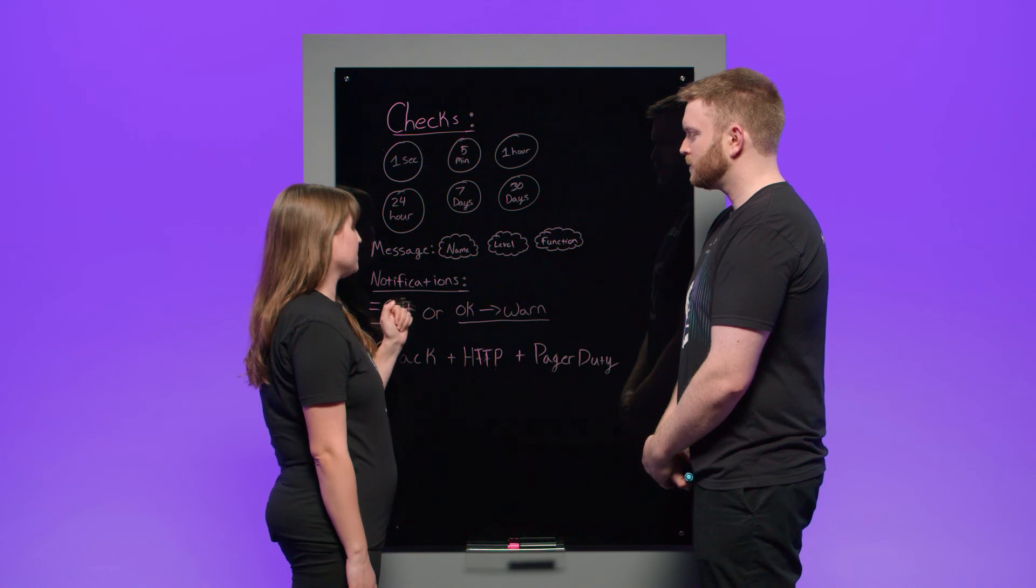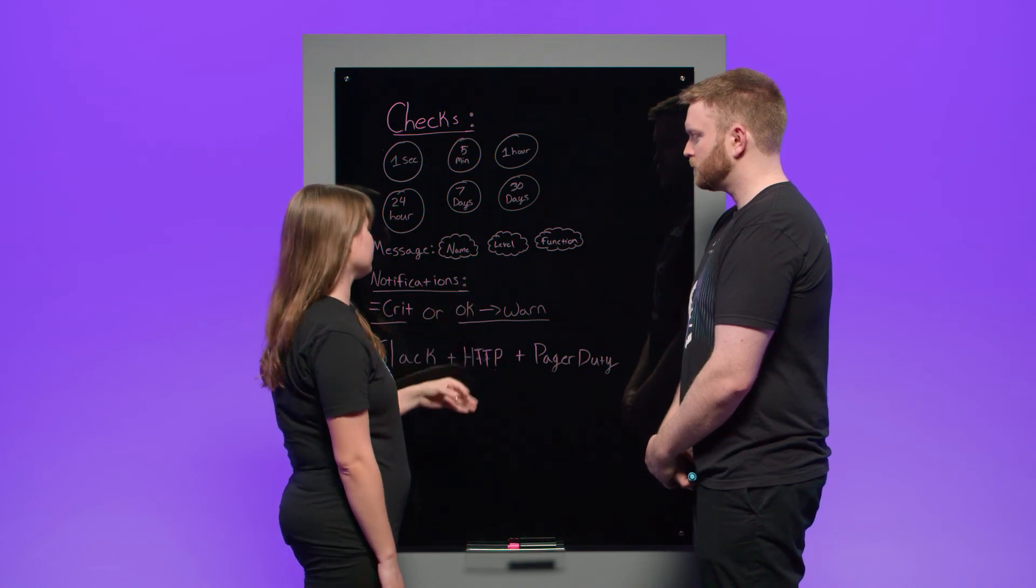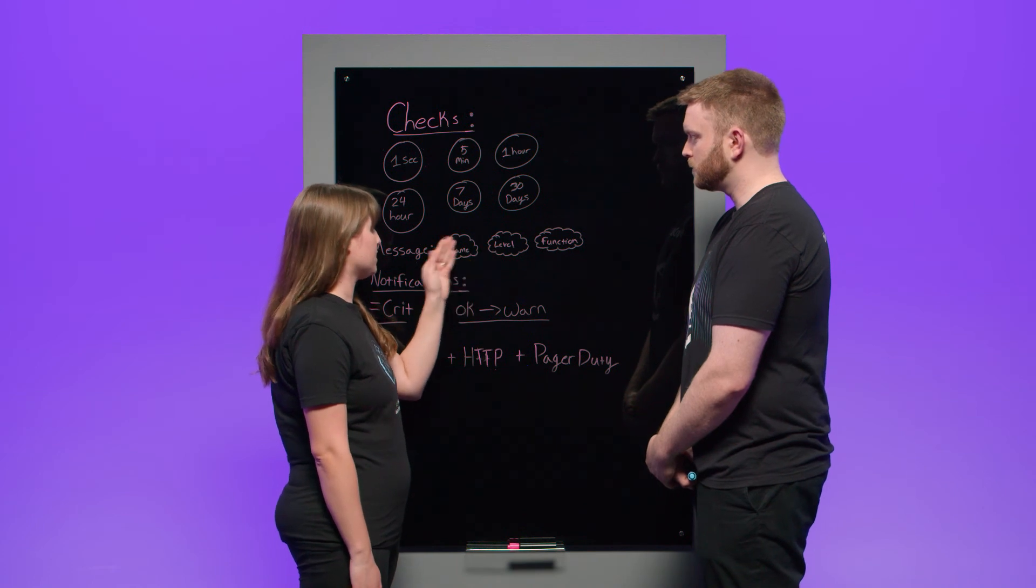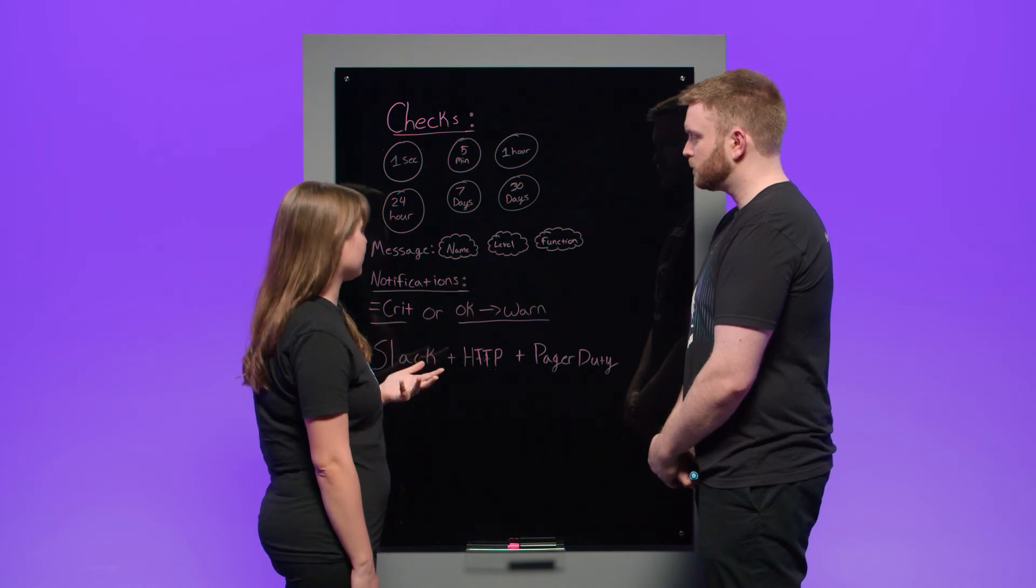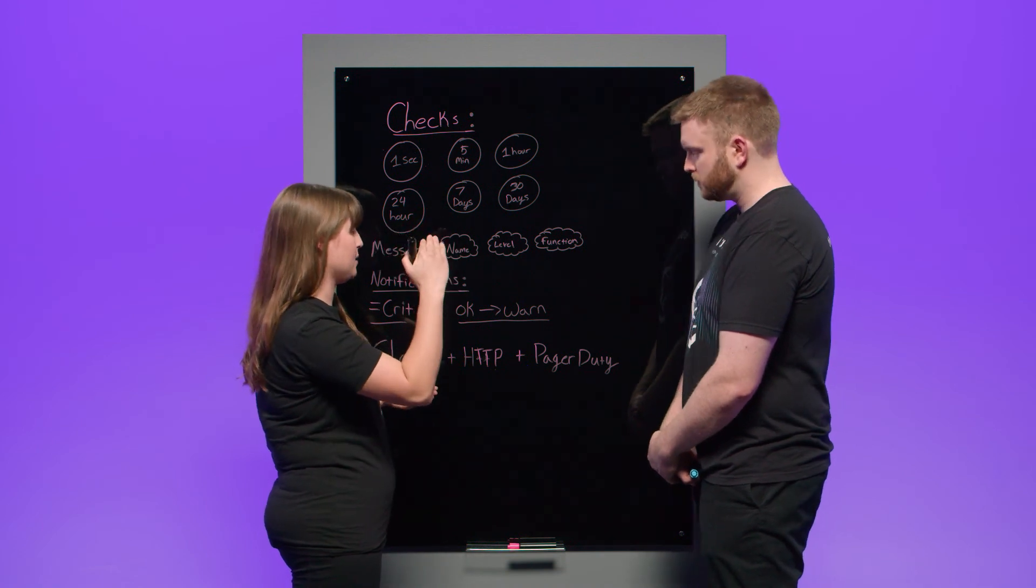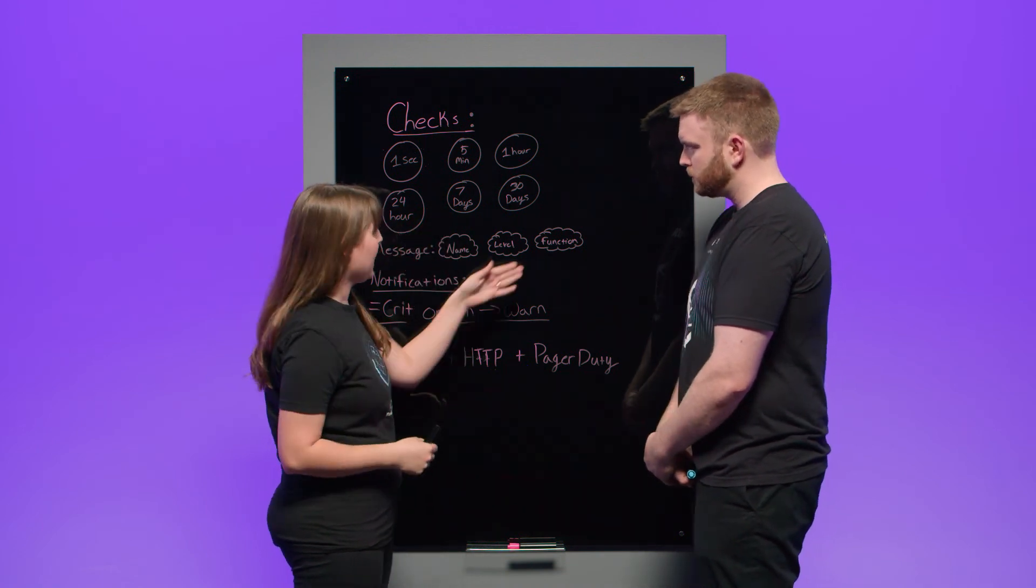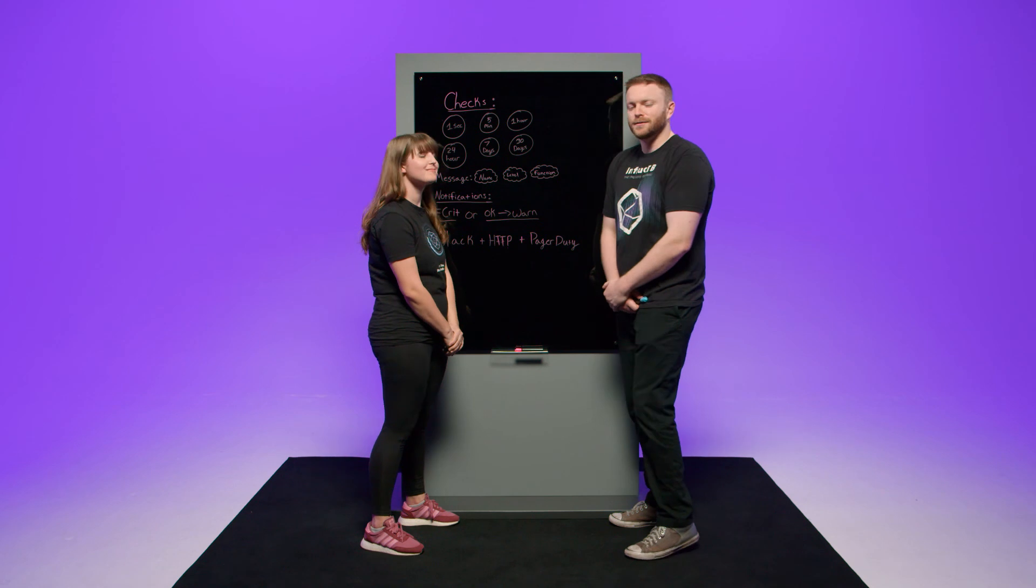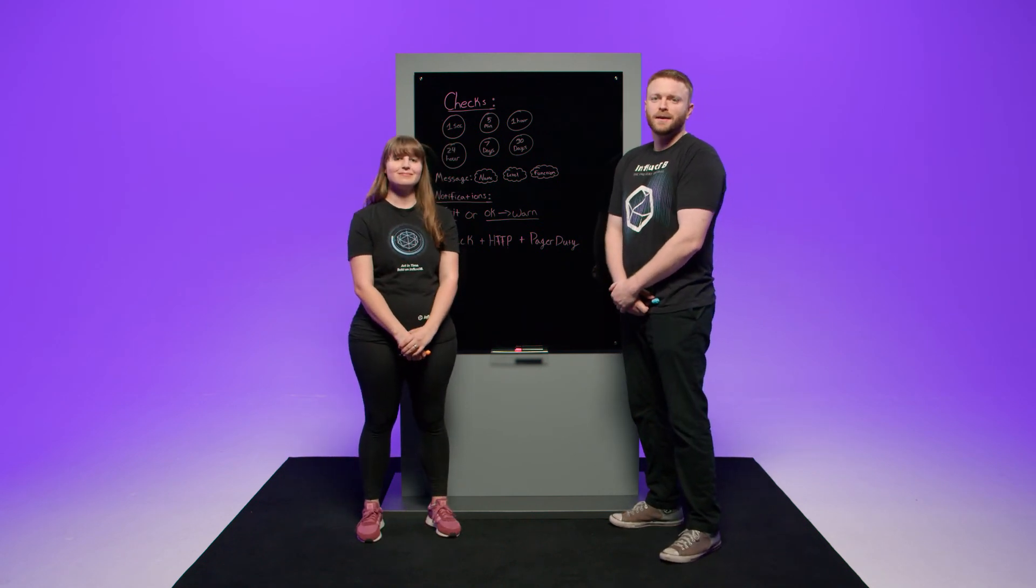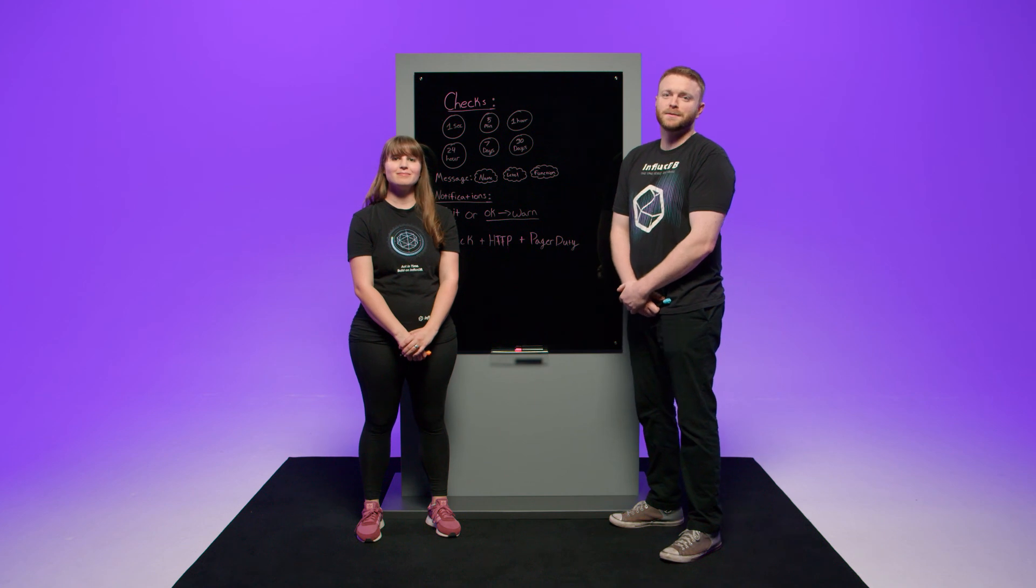And you'll also have messages as an option as well for your checks. And with this, you can change a few different values, mainly being name, which is the name of the check, the level, which is the data that activated this check in the first place. So if it reaches a critical, that's going to be that data point, that amount. And then finally functions, which can just make your checks messages a little bit more advanced. Cool. Thanks, Zoe. So there you have it. That's the checks and notification system with influx DB. Hopefully that was helpful and can't wait to see what you build with it.